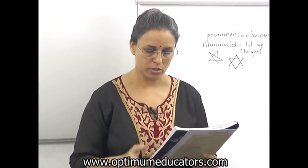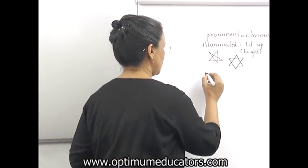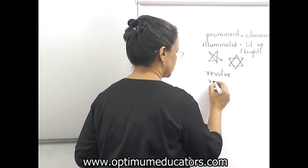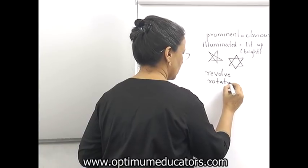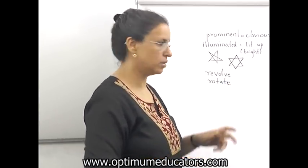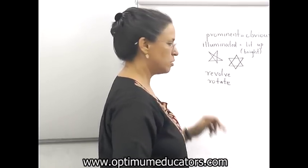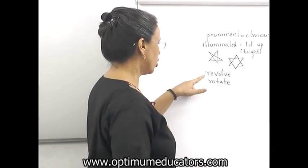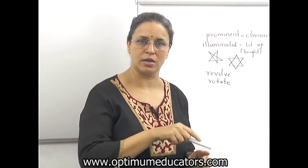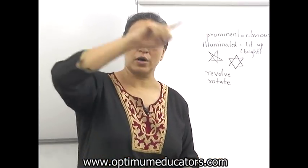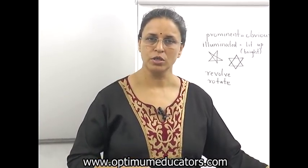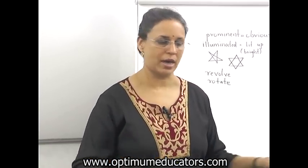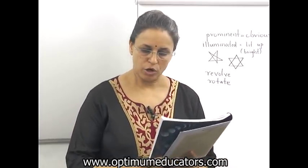Here we have two words: revolve and rotate. When we say that earth revolves and rotates — rotate means it goes around its own axis, it goes round and round this way. Revolve means it goes around the sun. When a planet goes around the sun, it is known as a revolution. It revolves around it, and rotation means it goes around its own axis. Planets revolve around a star — we basically revolve around the sun.